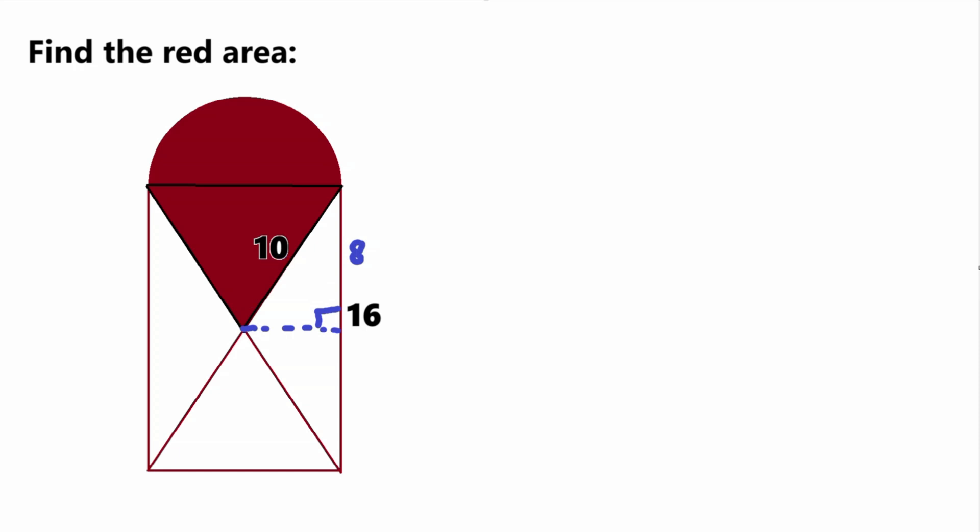And this side length here is 10. So this is a right triangle, which means that the Pythagorean theorem applies to this triangle. We know two side lengths already, our B value and our hypotenuse here of 10. So now we can use Pythagorean theorem, A squared plus B squared equals C squared, in order to find our A value here.